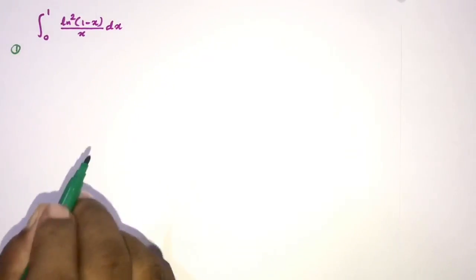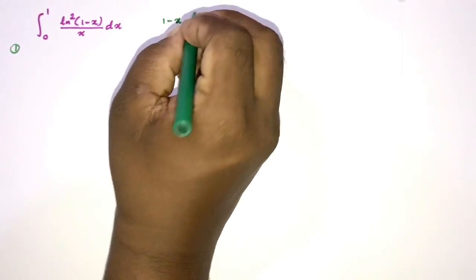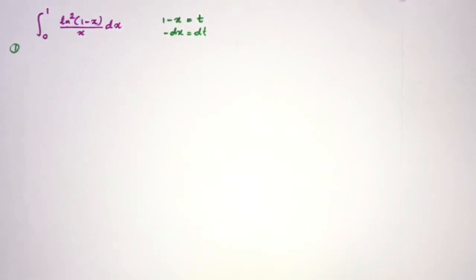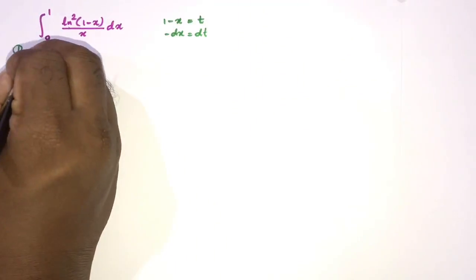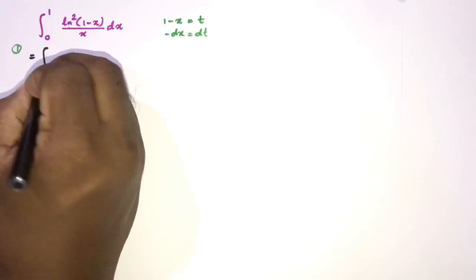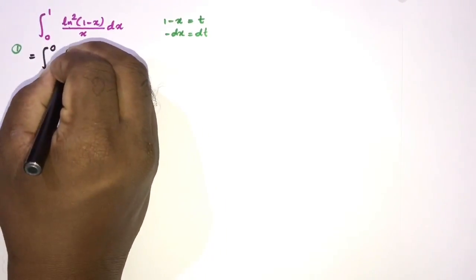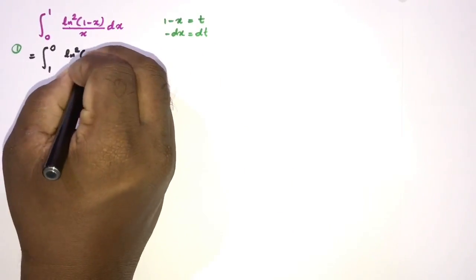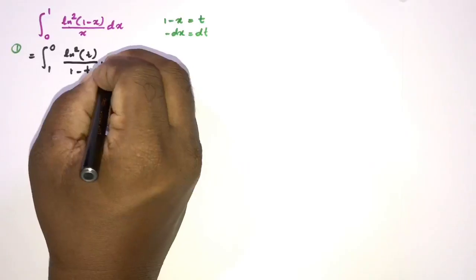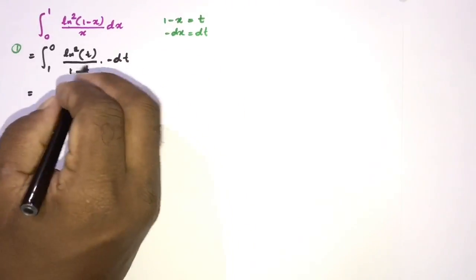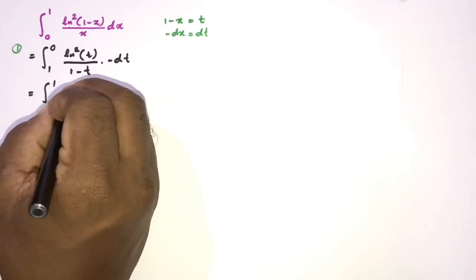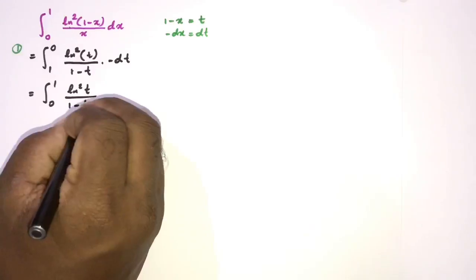For the first method, I am going to take the substitution 1-x = t. Differentiating gives -dx = dt. Changing the boundaries: when x→0, t→1, and when x→1, t→0. After substituting and cancelling the minus sign from flipping the limits, the integral becomes ∫₀¹ ln²(t)/(1-t) dt.